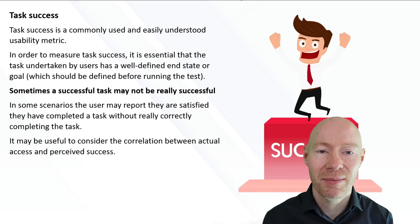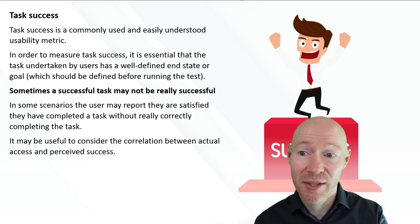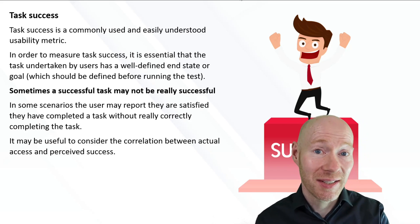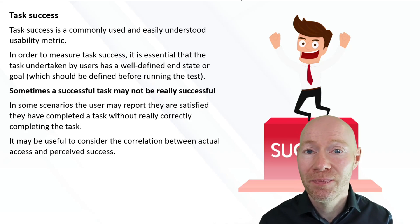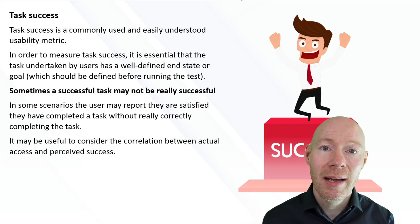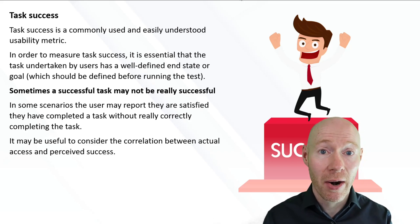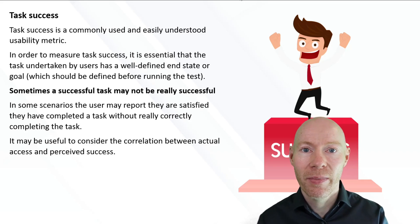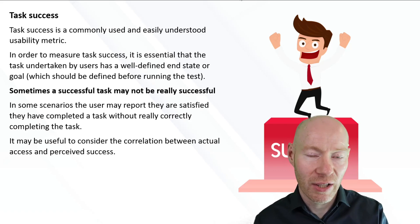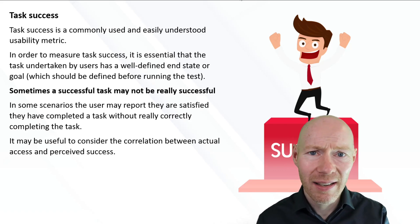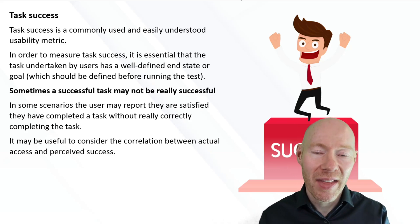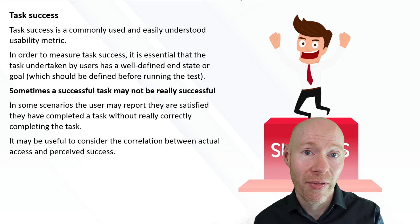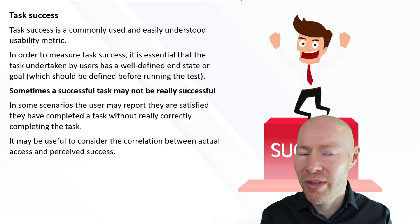An important aspect is that sometimes a successful task from the user's point of view may not necessarily be successful from a different perspective. That gets into instances where the user indicates they have finished the task and they're happy with what they've done, but from the developer's or experimenter's point of view, they haven't done it correctly or fully. This gives a situation where the user thinks one thing and the experimenter thinks another.